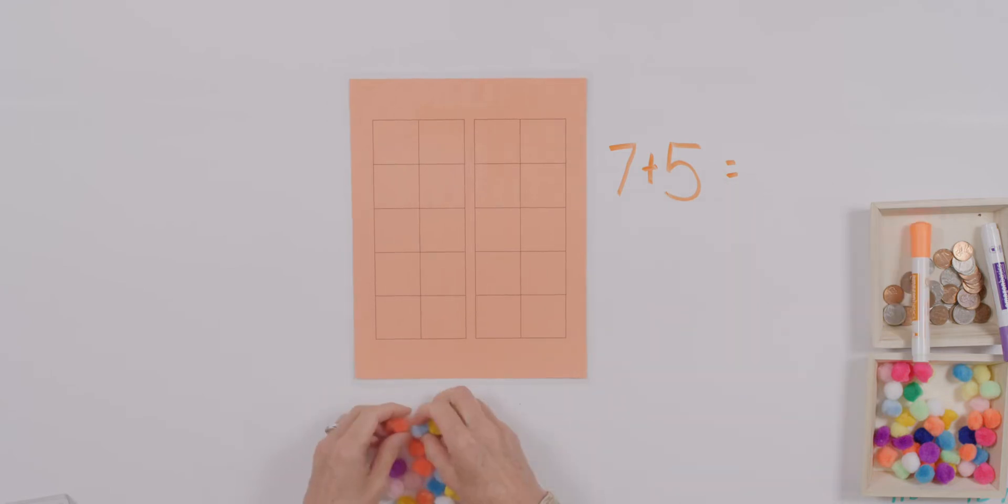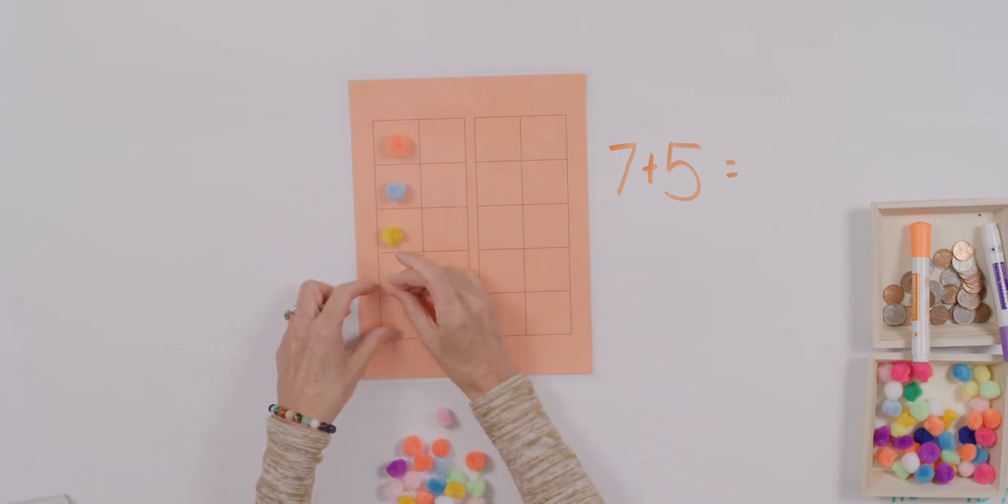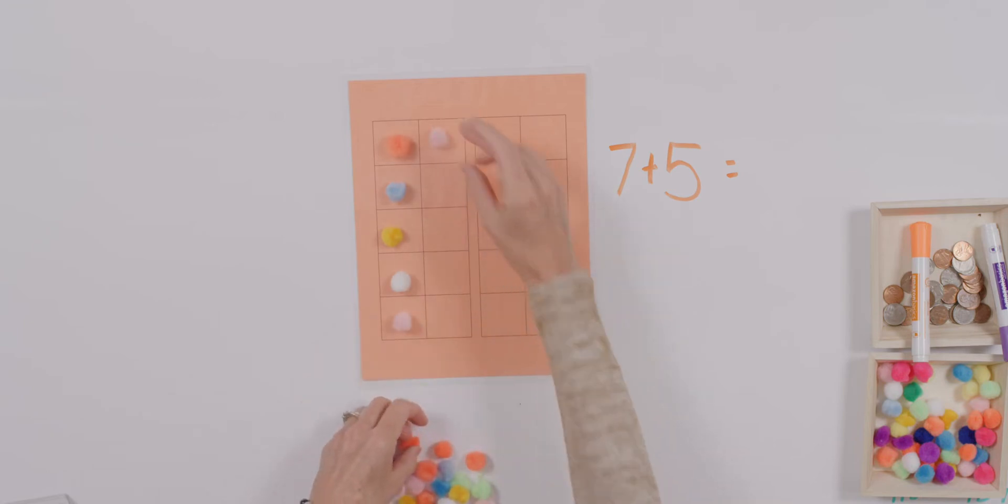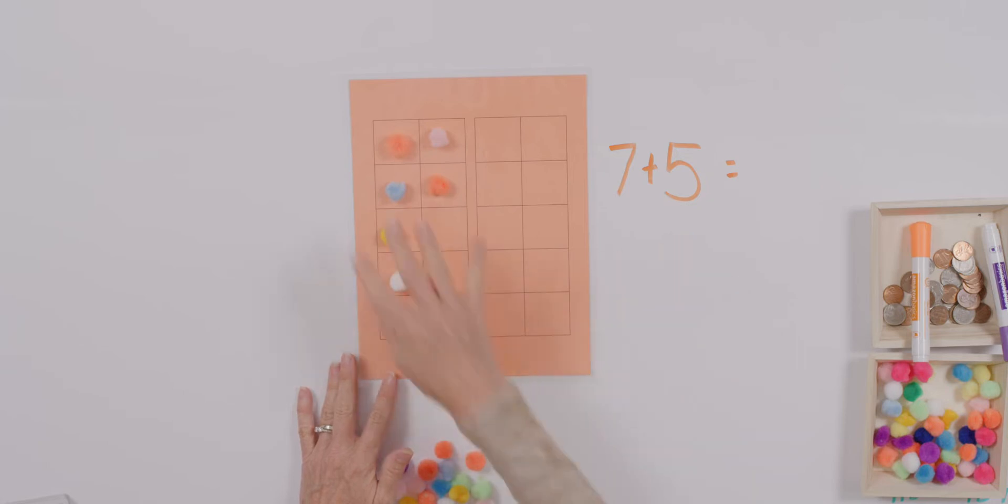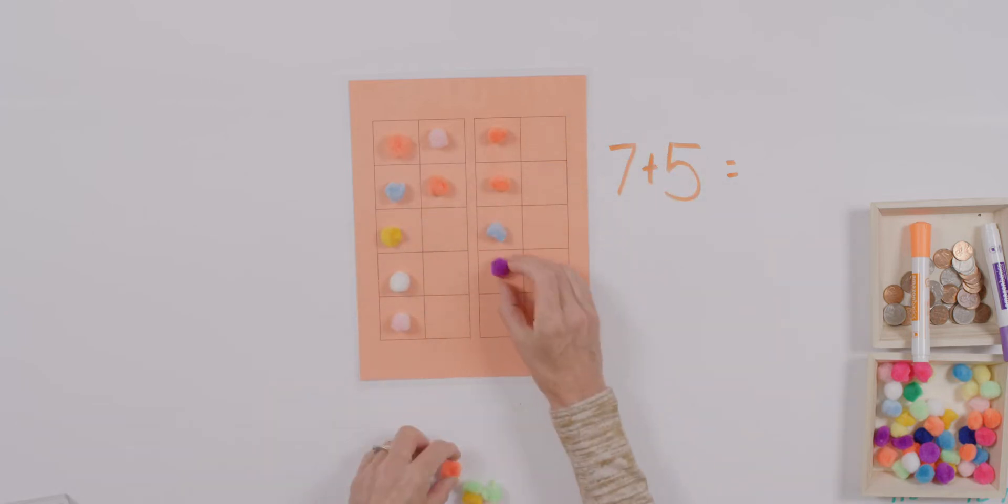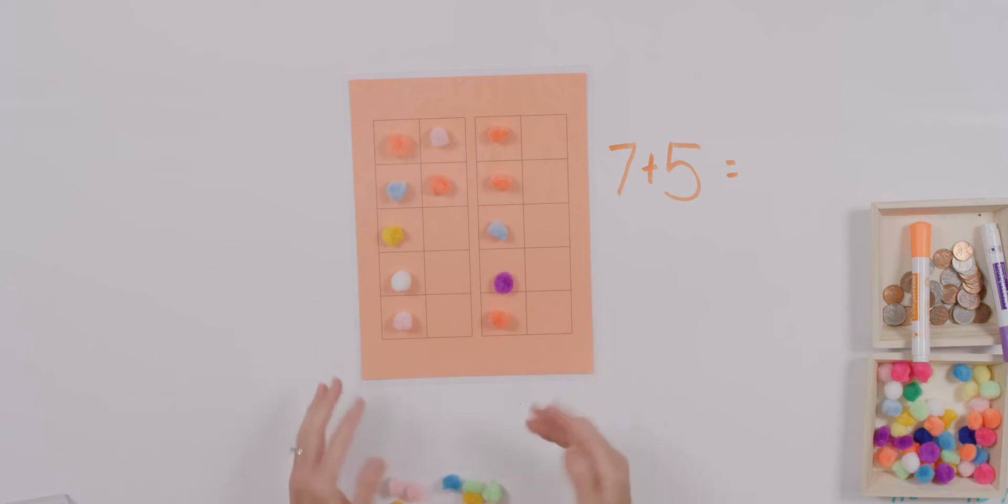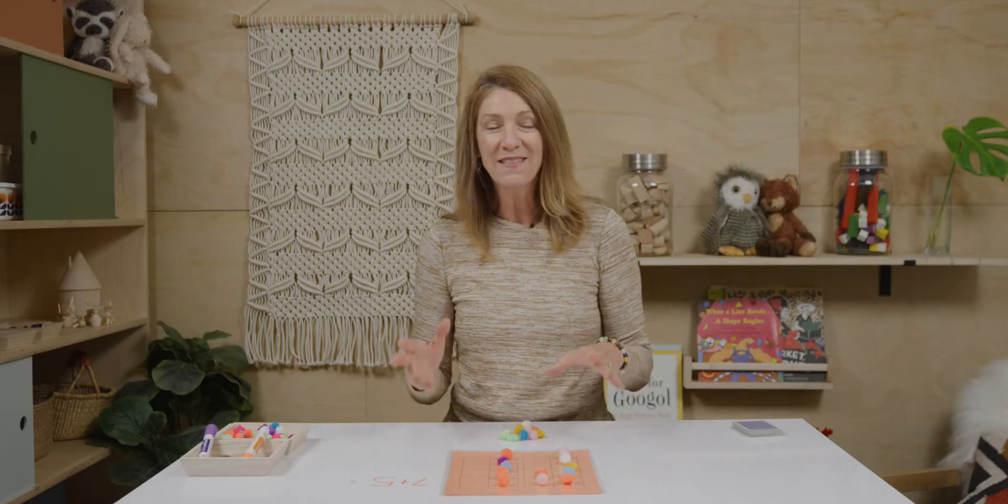So, I want to start with seven plus five. And I want to know what that equals. Let's just try to get my pups to stay where they belong. Sometimes these puffs want to get away. Can you see that I'm first building the number seven? I do like to ask myself which number is largest and start with that number. And you can see that while I could put my five in all different kinds of ways, I really like to just follow the pattern of the tens frame. So, can you easily see that I have seven and five? That's one of the things that's so great about using the frame.